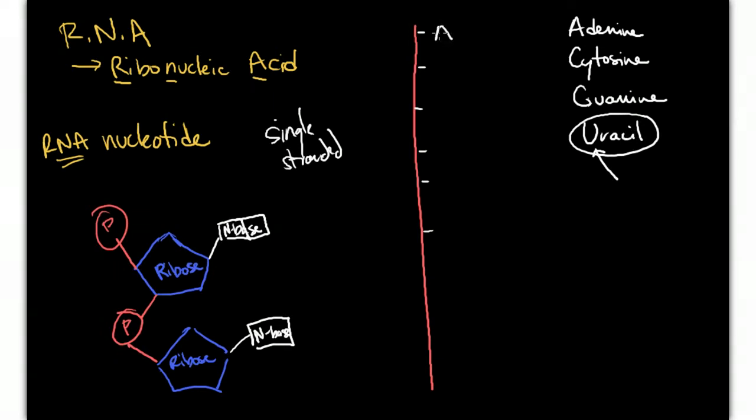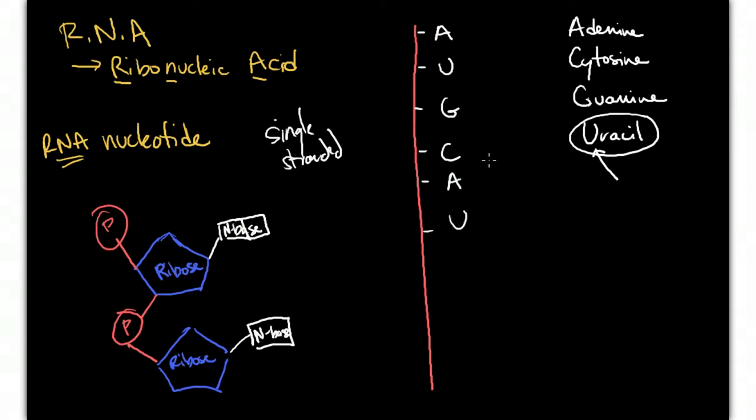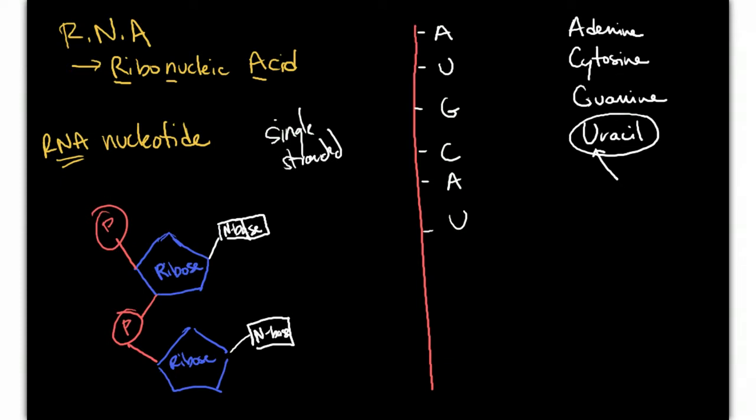So this could look like A, U, G, C, A, U. And that's going to be an mRNA sequence.